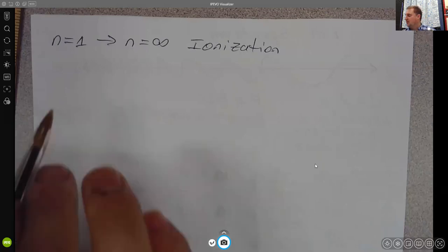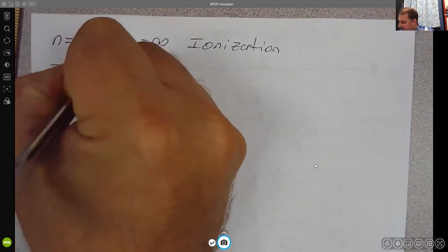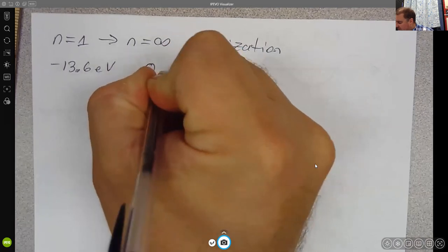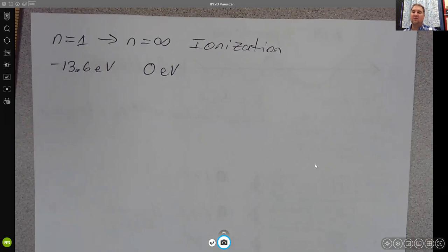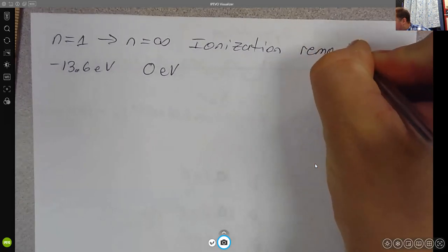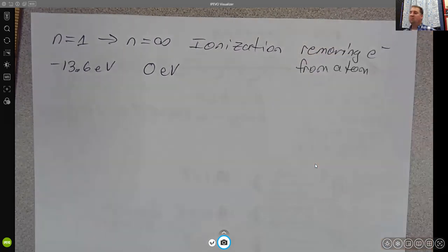For us to go from n equals one from negative 13.6 electron volts up to n equals infinity or zero electron volts, the process which takes us from n equals one to n equals infinity would be called ionization. This removal is complete at the point where the electron is at n equals infinity or an energy of zero. It is free to leave the atom.